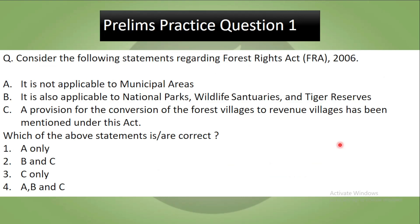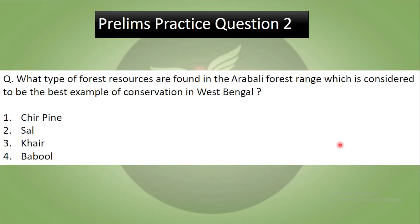Now let's discuss our today's preliminary question. Consider the following statements regarding the Forest Rights Act of 2006: A - it is not applicable to multiple areas; B - it is also applicable to national parks, wildlife sanctuaries and tiger reserves; C - provision for the conversion of forest villages to revenue villages has been mentioned under this act. Which of the statements above is correct? You can type the answer in the comment section. Second question: what type of forest resources are found in the Aravalli forest range, which is considered to be the best example of conservation in West Bengal? This was all about today's video and topic. Thank you, have a nice day and stay tuned with Analyst IAS for your better preparation.